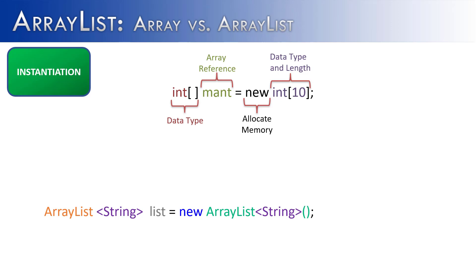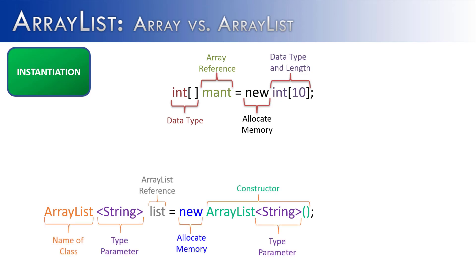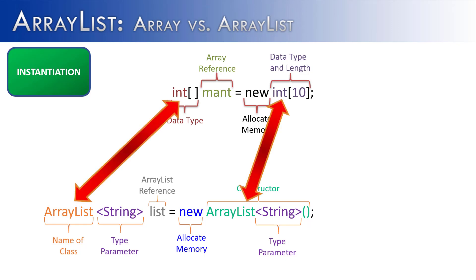An array list: you're going to have the name of the class, a type parameter, the reference, new which is allocating memory, and the constructor with another type parameter sandwiched in there. So an array is different in terms of data type — with an array list you're talking about a class, whereas with an array you're talking about what data type is going to be inside of the array.